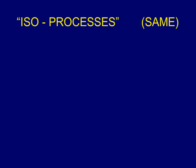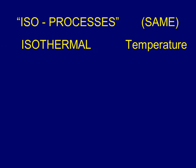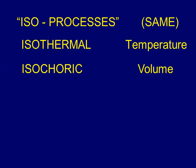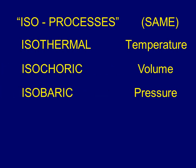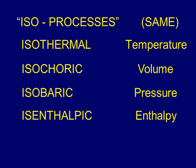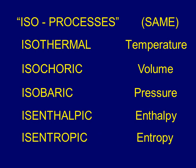Some iso-process terminology: iso means 'the same.' Isothermal means it occurred at constant temperature. Isochoric means constant volume. Isobaric means constant pressure — bar is a metric unit of pressure close to an atmosphere. Isenthalpic means it happened at constant enthalpy, and isentropic occurred at constant entropy.